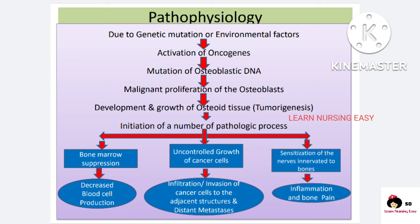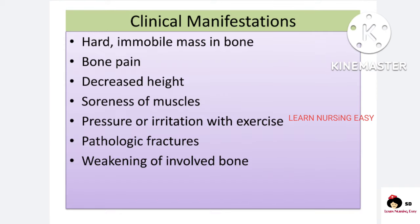When there is uncontrolled growth, cancer cells divide and invade nearby structures, and they can also spread through blood to distant organs, causing distant metastasis — meaning they can cause cancer elsewhere in the body. When cancer cells grow and compress nearby bones and tissue, they cause inflammation and severe bone pain.